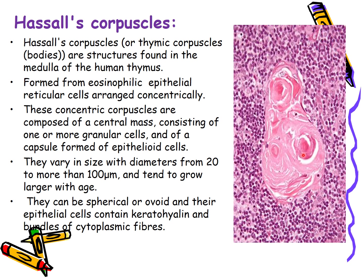Hassall's corpuscles contain keratohyaline and bundles of cytoplasmic fibers. They are seen more in aged thymus glands than in young ones, and calcification also takes place within them. However, the exact function of Hassall's corpuscles is not certain.